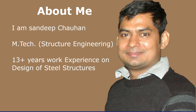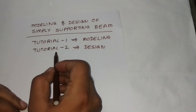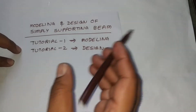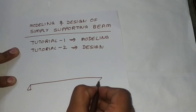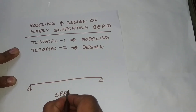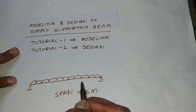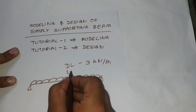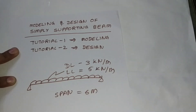Hi, welcome to Steel Design. This is a brief introduction. Today we will do modeling and design of a simply supported beam. There will be two tutorials — Tutorial 1 covers modeling and Tutorial 2 covers design. The simply supported beam span will be 6 meters, with a uniformly distributed dead load of 3 kilo Newtons per running meter and a live load of 5 kilo Newtons per running meter. We will design this in STAAD Pro.